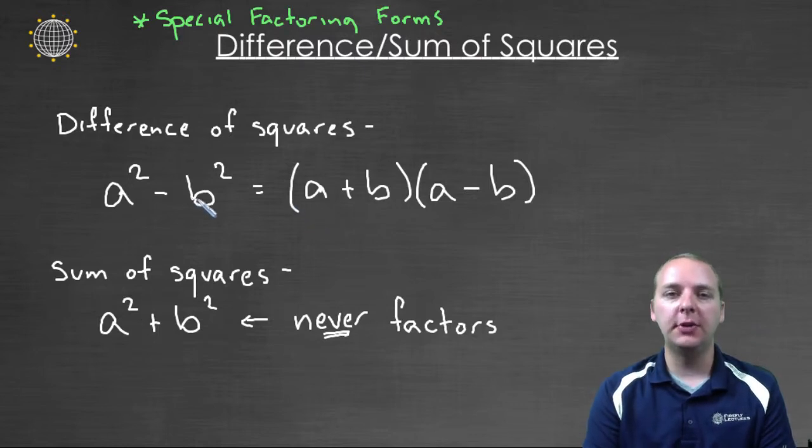There are a few different special factoring forms. In this video, we're going to look at the difference of squares. If you have a² - b², it automatically factors as (a + b)(a - b). If you have a sum of squares, these never factor, and this is what we call a prime polynomial.